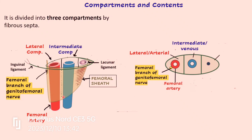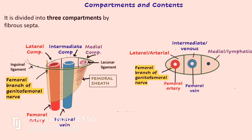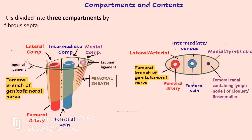The intermediate compartment is also known as the venous compartment because the femoral vein passes through it. The medial-most compartment is the smallest and is known as the lymphatic compartment. It contains one lymph node belonging to the deep inguinal group of lymph nodes — known as the node or gland of Cloquet or Rosenmuller — plus lymphatics connecting the deep inguinal group with the external iliac group of lymph nodes, and loose areolar tissue.